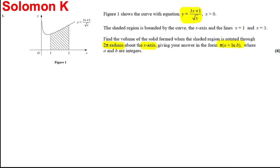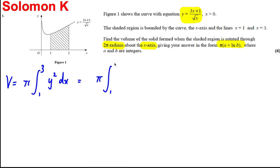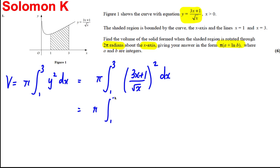The volume is going to be π times the integral between 1 and 3 of y² dx, which is π times the integral between 1 and 3 of this thing squared — that is (3x+1) over root x, all squared — with respect to x.